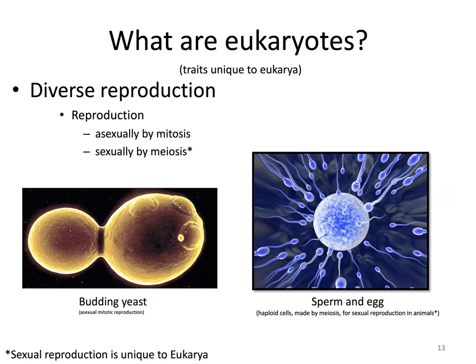Eukaryotes are also very diverse in the ways they reproduce. They can reproduce asexually through mitosis — basically using mitosis, or cellular reproduction, to make copies of themselves, like you see in budding yeast. When you do mitosis, you're making an exact genetic copy of your chromosomes. This yeast — a fungus and therefore a eukaryote — reproduces mitotically by budding off and making an exact genetic replica of itself.